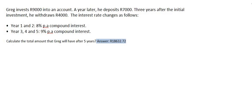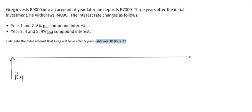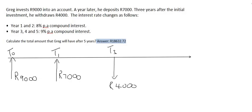Let's do one timeline for now. This timeline is going to show us all the money coming in and coming out. Greg starts with 9,000 rand — that's money coming in — at t0, at the very beginning. A year later, at t1, he deposits 7,000 rand — more money coming in. Three years after the initial investment, at t3, he withdraws 4,000 rand — that's money coming out. That's the timeline complete; no interest rate shown on this timeline.